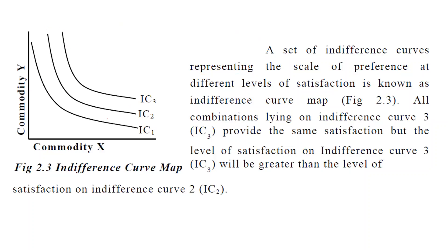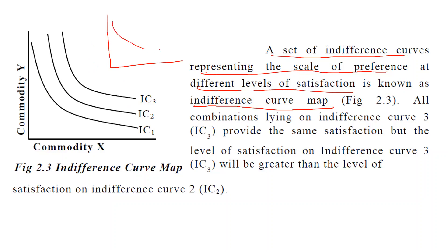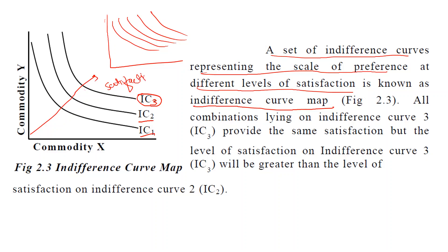A set of indifference curves representing the scale of preference at different levels of satisfaction is known as an indifference curve map — various indifference curves on a single graph representing different levels of satisfaction. All combinations lying on IC3 provide the same level of satisfaction, and IC3 is higher compared to IC2 and IC1. The farther we move from the origin, the greater the satisfaction. So the satisfaction level on IC3 is more than IC2, and IC2 is more than IC1.